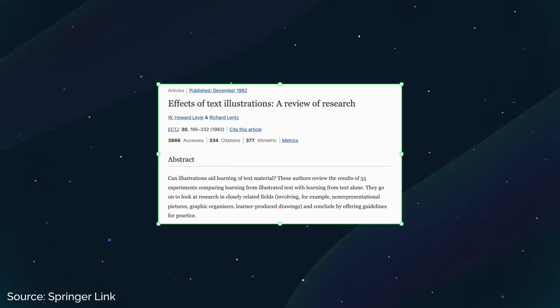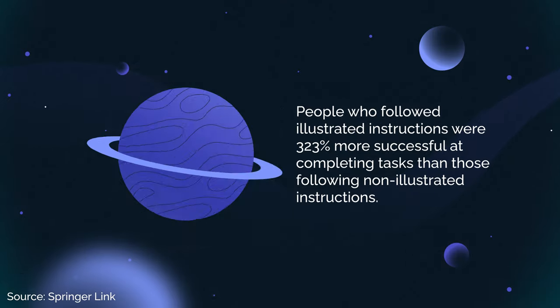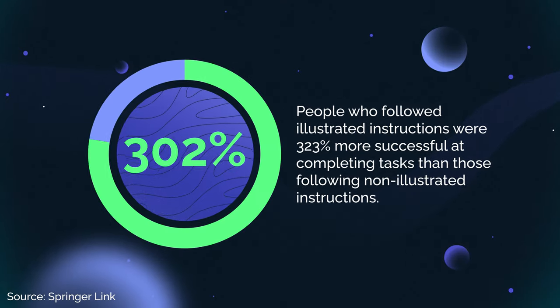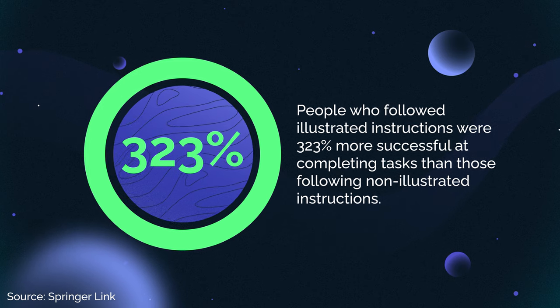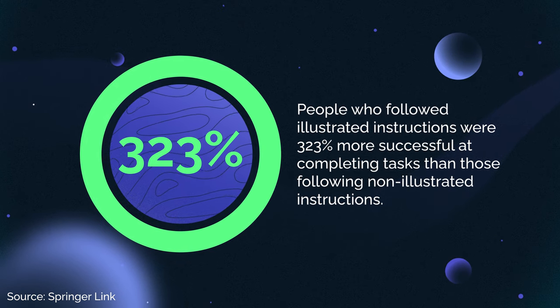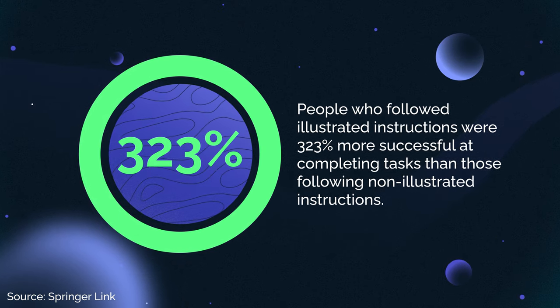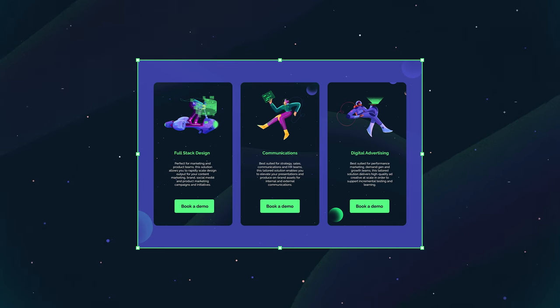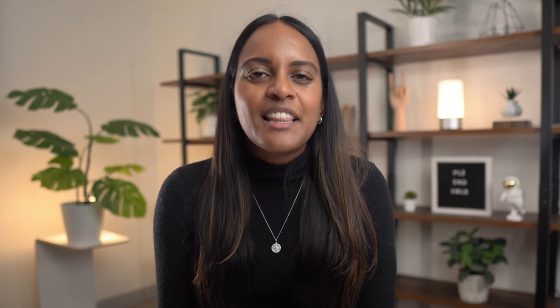There are studies on this. In fact, one study showed that people who followed illustrated instructions were 323% more successful at completing tasks than those following non-illustrated instructions. Think about most mobile apps — there's a reason why so many of them use icons and illustrated animations to walk you through onboarding. That's because illustrations clarify your message and at the same time give your brand a consistent look that builds equity through association.